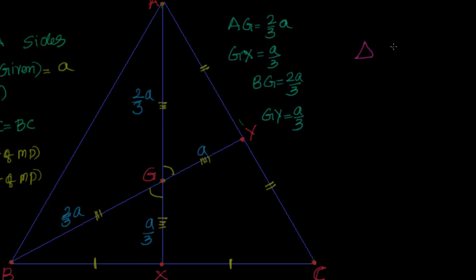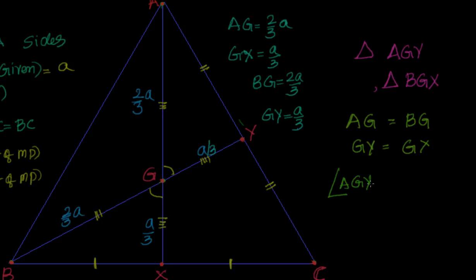We are considering triangles AGY, BGX. These are the two triangles we are looking at. Now what I can say about them? What I can say is AG is equal to BG, GY is equal to GX. By the way, this is A by 3. GY equal to GX. Not only that, we know that angle AGY is equal to angle BGX because vertically opposite angles.